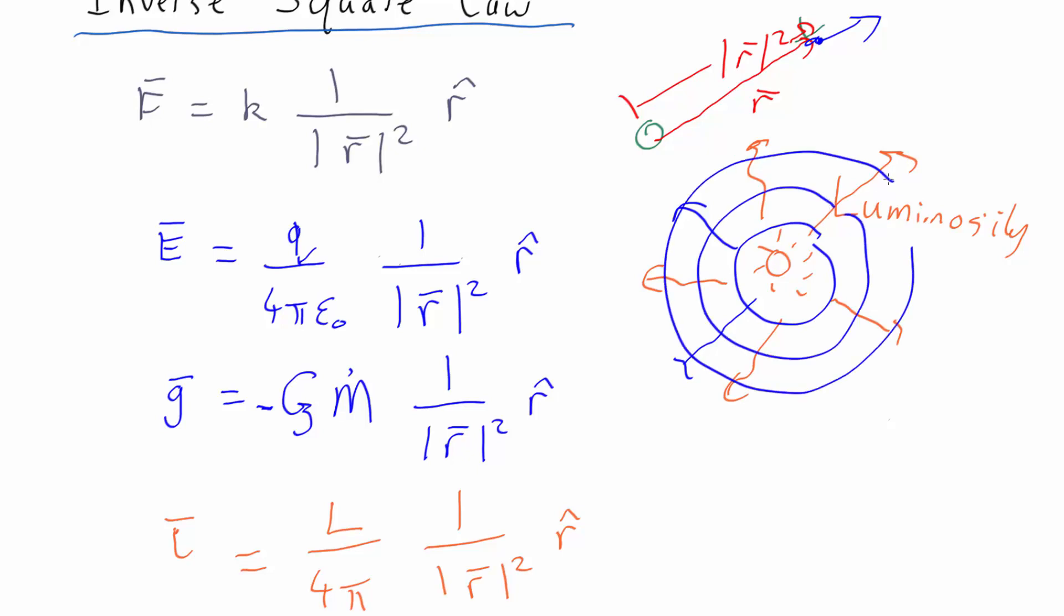And you'd also imagine that all the photons that go through a shell here must also go through a shell there and also go through a shell there. As the shells get bigger, the area of a sphere, 4 pi r squared, goes up as r squared, so the number of photons per unit area goes down as r squared.